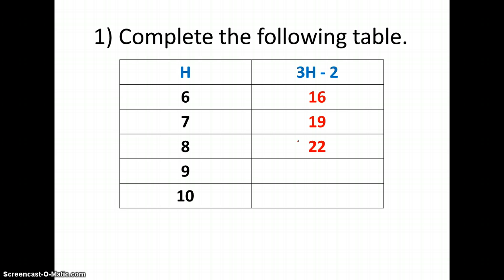Now you may be noticing a pattern here. Every time I increase h by 1, you'll notice I am increasing the value of my expression by 3. So as long as my h values go in order, I can continue this table without having to plug in and do the work. So I would add 3 to 22 and get 25, and 25 plus 3 is 28.